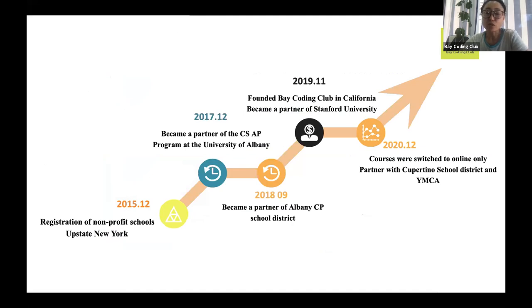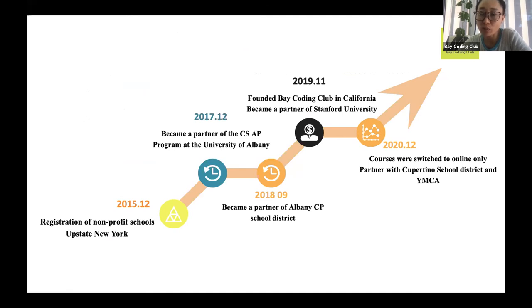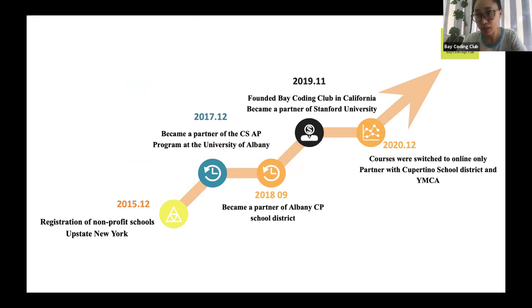This is our roadmap — we were established in 2015, and then we moved to Silicon Valley in 2019. As you know, we encountered the pandemic, so we canceled all our on-site courses and pushed them online. Right now we only provide online courses, but in September we're going to provide offline classes again at Cupertino, as well as New York, upstate New York, and Australia.